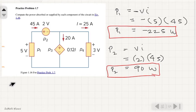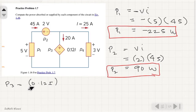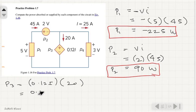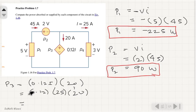For P3, our third component, the voltage is 0.12i, and the current i is 20 amperes. The value of i here is 25 amperes. So 0.12 times 25 times 20 equals 60 watts. This is our third component, P3.